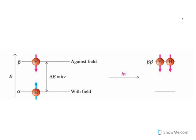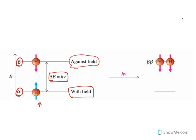The two orientations are called alpha (aligned with the external field, low energy) and beta (against the field, high energy). The energy difference between them is hν, and this difference is proportional to the applied field. If the applied field is stronger, the energy difference is larger. When radiation of the matching frequency is given, a spin flip or nuclear transition occurs.